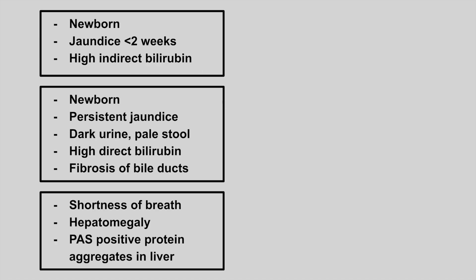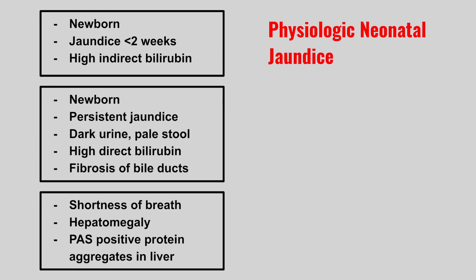The next patient is a newborn with jaundice that gets better within two weeks and high indirect bilirubin. This is physiologic neonatal jaundice, due to decreased UDP-glucuronosyltransferase levels. That's why we get the high indirect bilirubin, and it usually resolves within one to two weeks.